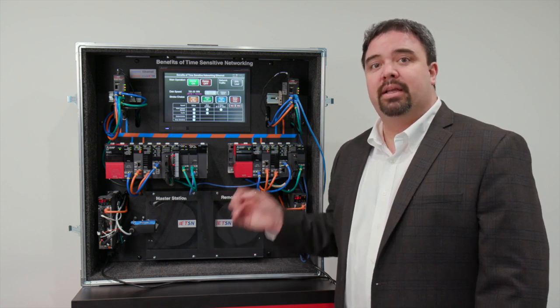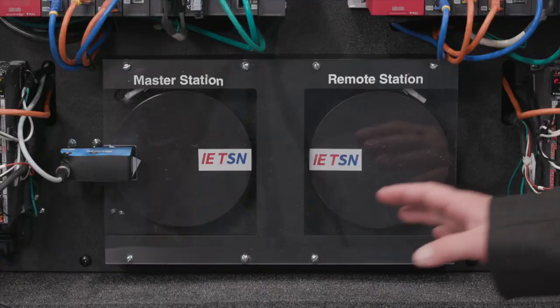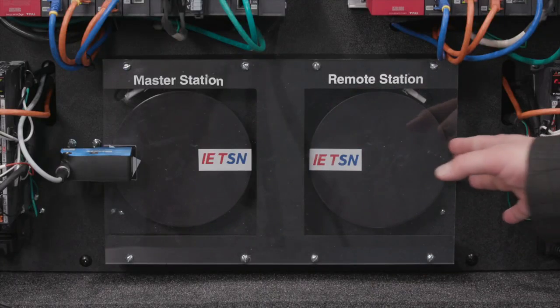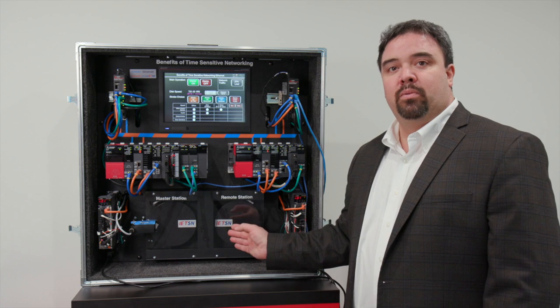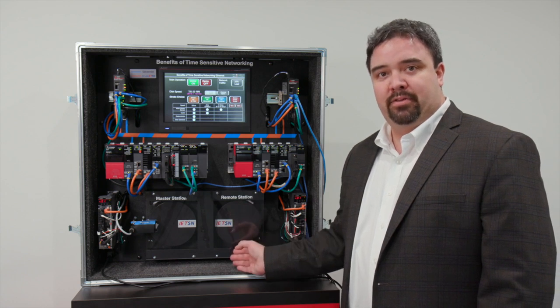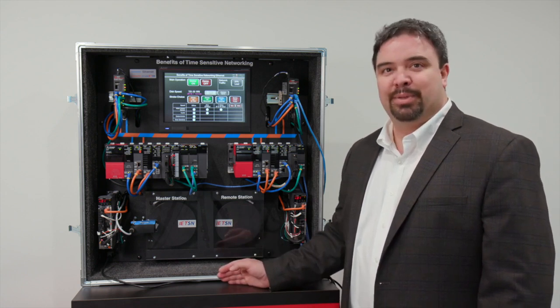What we're going to vary is the LED strobe. On the left side will be TSN and that won't change, but on the right side we'll change to Ethernet and Ethernet IP and we'll see what that looks like. Let's begin.